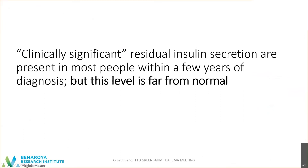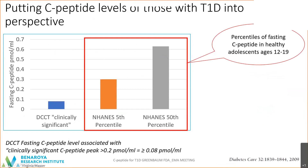Clinically significant levels are present in most people, but this level is far from normal. Extrapolating the DCCT-stimulated C-peptide clinically significant level to an equivalent fasting level, and comparing it to fasting C-peptide levels from national normal populations published by the CDC in the NHANES studies — the 0.3 fasting C-peptide level is the fifth percentile of a normal healthy population, while the level you'd expect at the 50th percentile of healthy adolescents ages 12 to 19 is much higher. You can readily see how a normal level of C-peptide is a lot higher than the clinically significant C-peptide we've talked about.